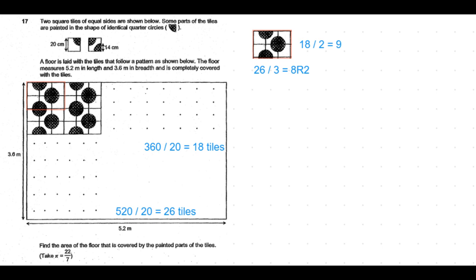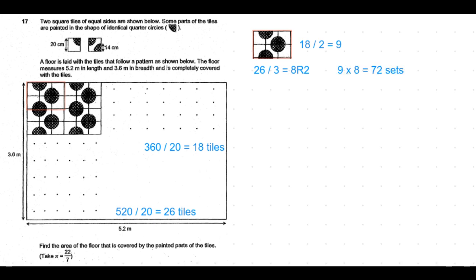So let's now first find out how many full sets can accommodate. So the width is 9 and the length is 8, so 9 times 8 equals 72 full sets can be fit. So a set here is a set of 6 tiles.